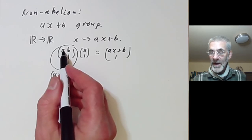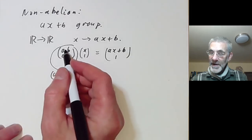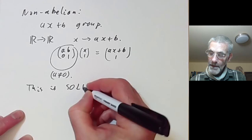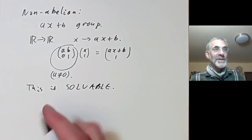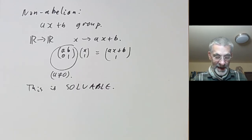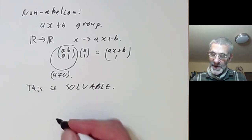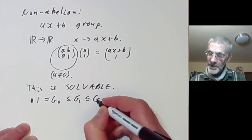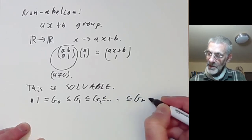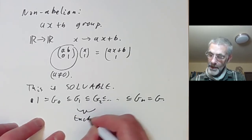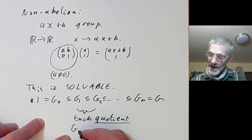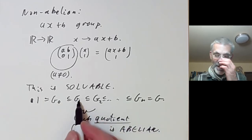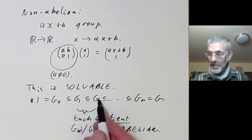So this group can be thought of as the group of all these matrices where A is not equal to zero, and its connected component consists of matrices with A positive. This group is not abelian, but it is an example of a solvable Lie Group. The meaning of solvable for Lie Groups is much the same as for discrete groups: we have a series of subgroups G₀ ⊂ G₁ ⊂ ... ⊂ Gₙ = G such that each quotient Gᵢ/Gᵢ₋₁ is abelian, where each Gᵢ is a normal subgroup of the next.